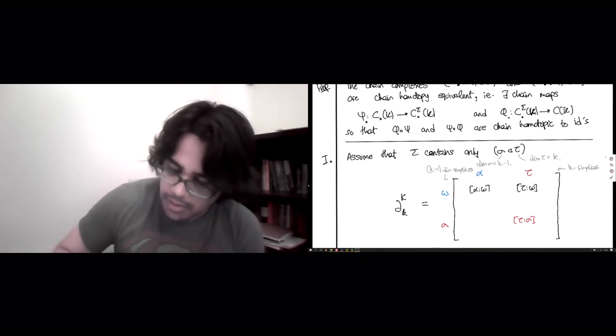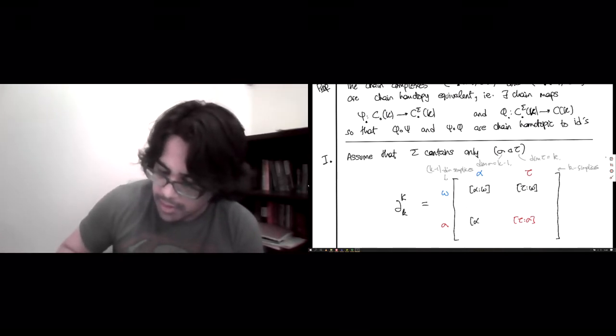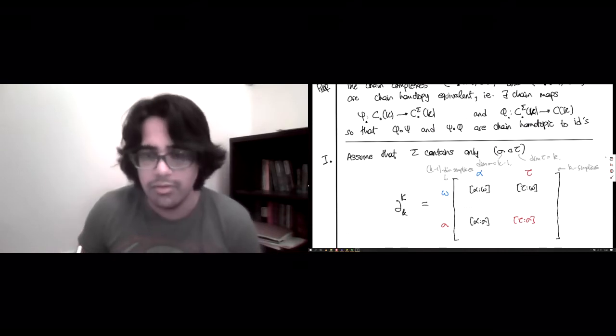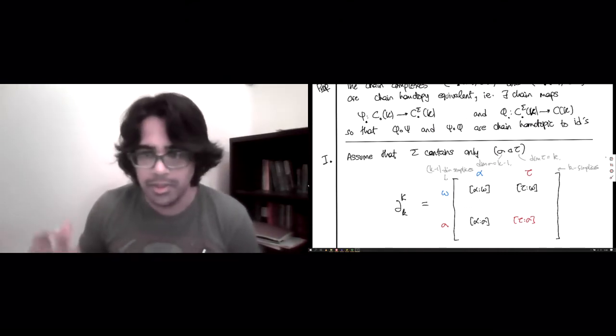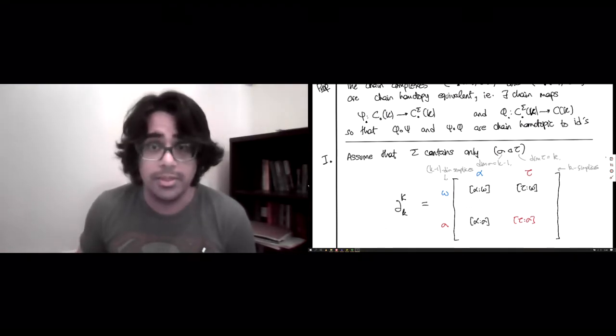Again, we have no knowledge, except for the entry in red. All the others could be whatever they want. The entry in red can just not be 0. It must be plus or minus 1.